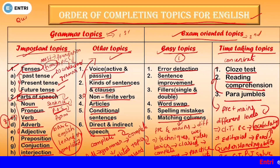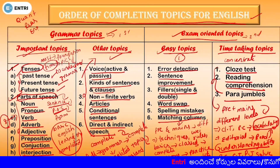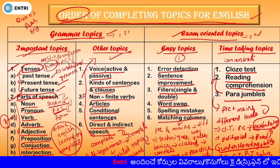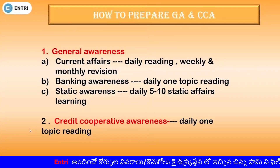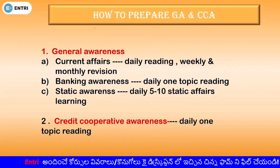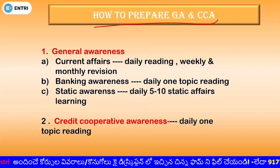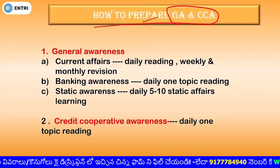So we have chosen three subjects — Quant, Reasoning, and English — and in these three subjects I have completed the order of completing topics. Next, we have General Awareness and Credit Cooperative Awareness. These two topics are available. Under General Awareness, I have three sections: Current Affairs, Banking Awareness, and Static Awareness.